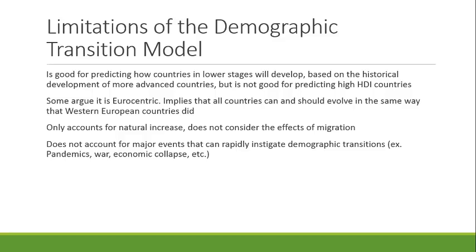Finally, the model doesn't account for major events that can rapidly instigate demographic change — pandemics, war, economic collapse — things that might cause a population to shrink very rapidly. A group of stage four countries going to war, like World War I or World War II, would cause death rates to skyrocket, or a superbug could kill millions. The model also doesn't account for the reverse — if humanity were to discover cheap, renewable, plentiful energy and live in a post-scarcity society, we could support a much higher population. The model is essentially looking at the way the world has been for the past couple hundred years and applying that going forward.